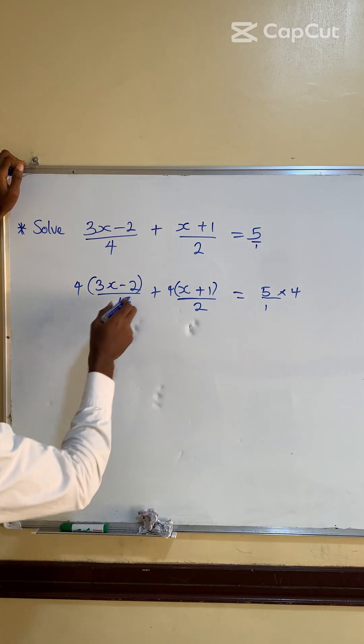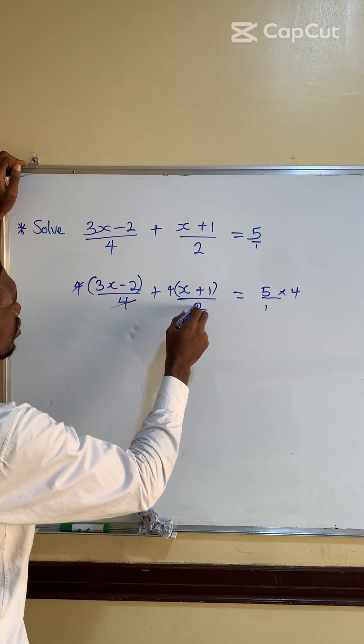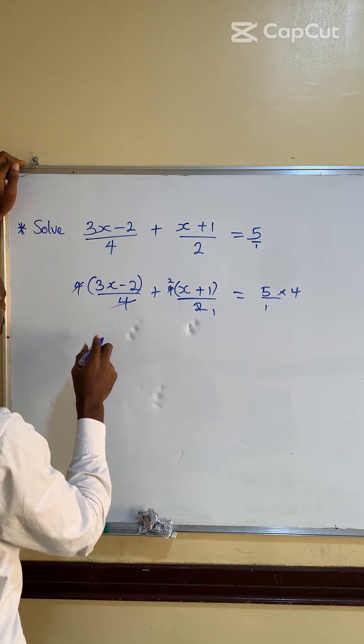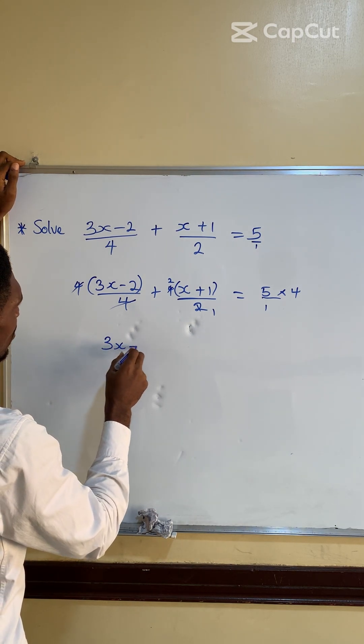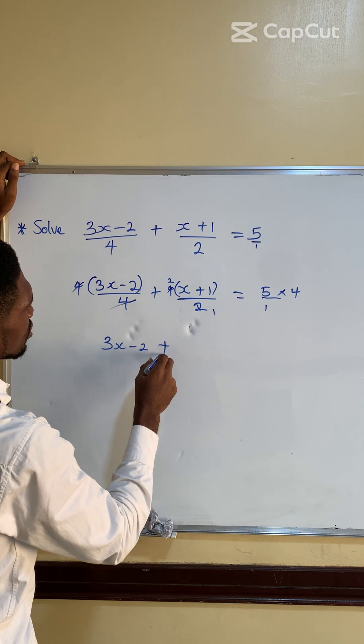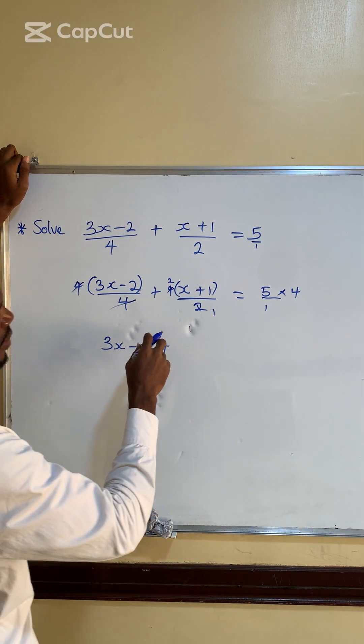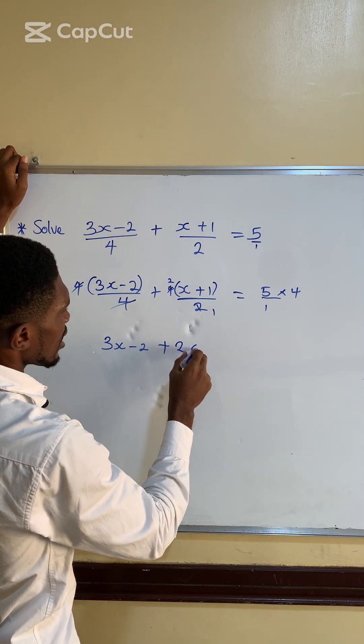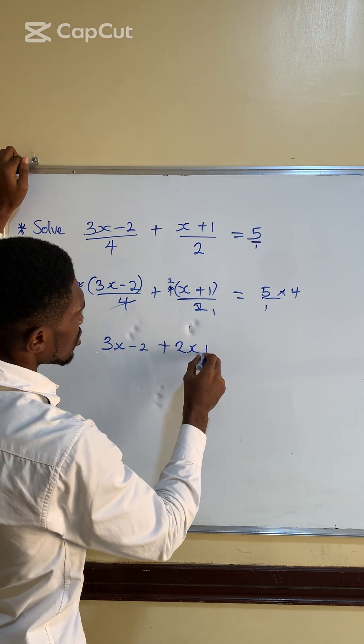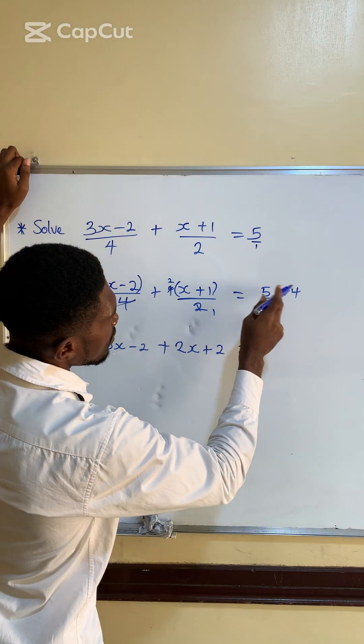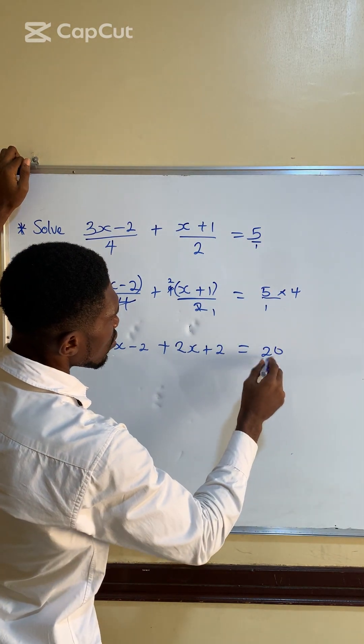So 4 will cancel 4. 2 here becomes 1, 2 here becomes 2. So that you have 3x minus 2 plus 2 times x. Now expand the bracket. 2 times x is 2x plus 2 times 1 is 2. Is equal to 5 times 4, which is 20 over 1.